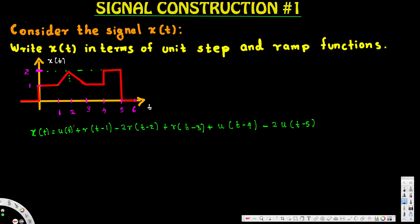Now to verify this expression, we can take a point and check it. Let's verify at t = 2. We replace all t with 2: u(2), then r(t - 1) becomes r(2 - 1) = r(1), then -2r(t - 2) becomes -2r(2 - 2) = -2r(0), then r(t - 3) becomes r(2 - 3) = r(-1).